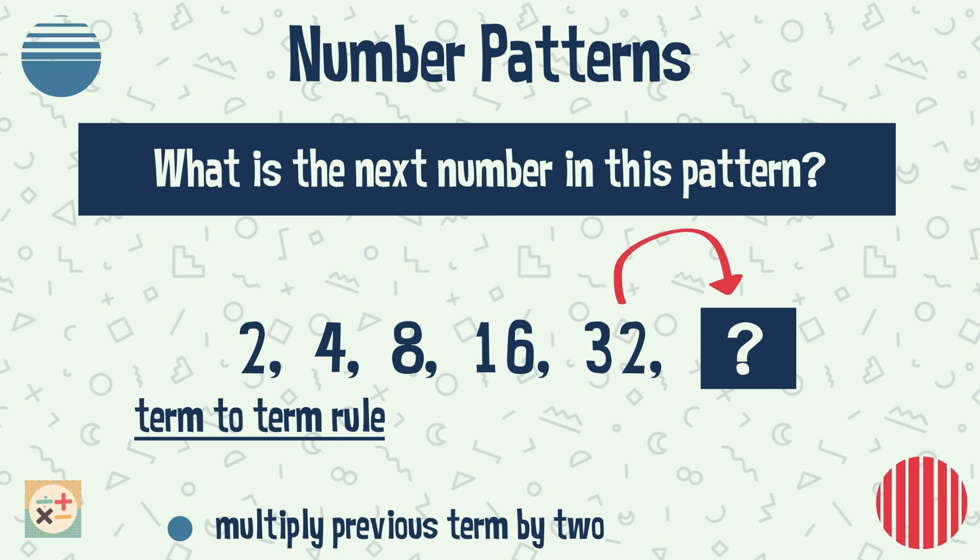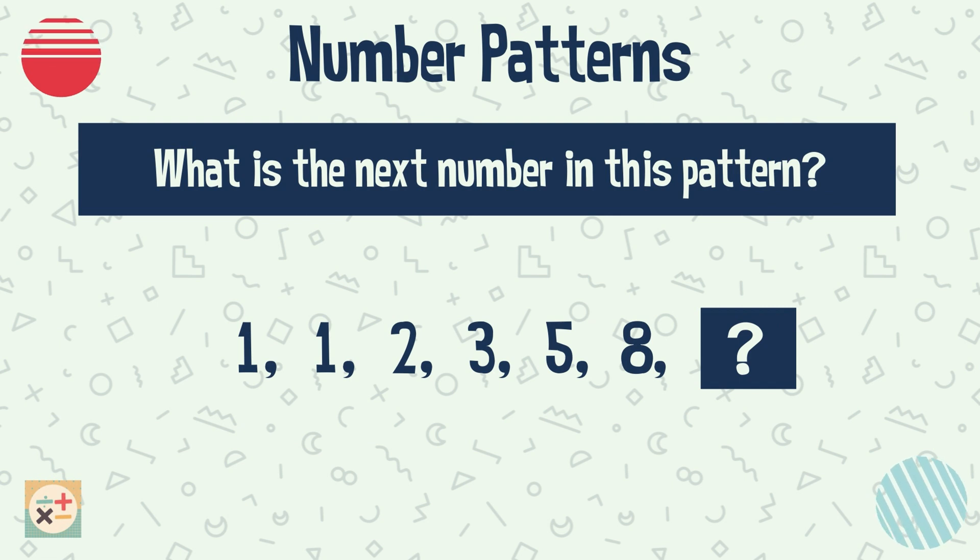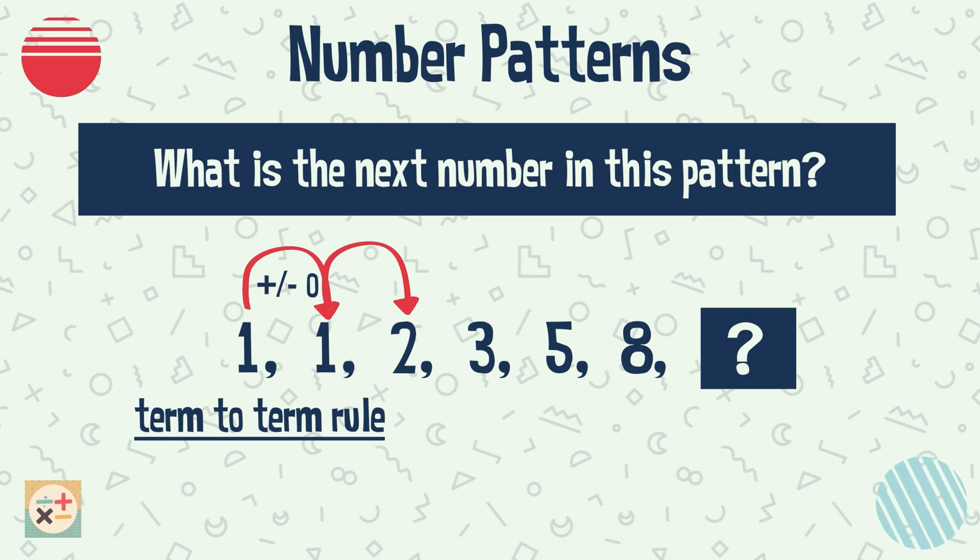The second number sequence is 1, 1, 2, 3, 5, and 8. Let's see if we can find a term to term rule for this sequence. Notice there is no difference between the first two terms as they are both the number 1. Let's instead move on to the next term. To obtain the number 2 from 1, we can either add 1 or multiply by 2.